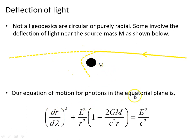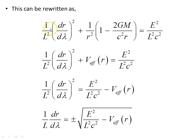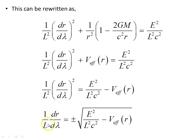The equation of motion for photons in the equatorial plane is as found in the previous video. This can be rewritten by multiplying through by 1 on L squared, giving us an effective potential. Rearranging with the effective potential on the right and taking the square root of both sides produces our working equation. For the rest of the video, the plus or minus sign in front will be dispensed with.